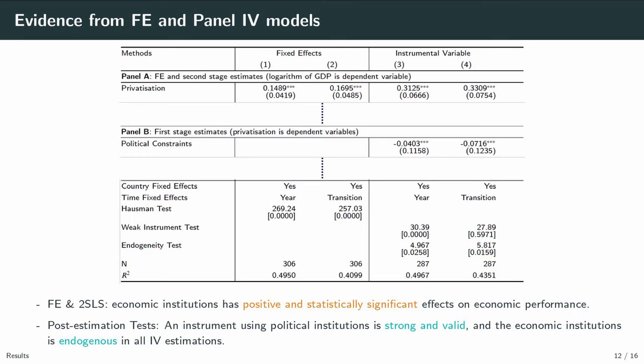This is a summary of the main results. Fixed effects and two-stage least squares estimates indicate that economic institutions have a positive and statistically significant effect on economic performance. The F-statistics on weak instrument tests provide evidence that the instrument using political institutions is strong and valid. The endogeneity test results show that the economic institution is endogenous in all instrumental variable estimations. As a robustness check, I used alternative dependent variables: a five-year average GDP to control macroeconomic variables with high volatility, and GDP per worker as the direct determinant of economic performance.